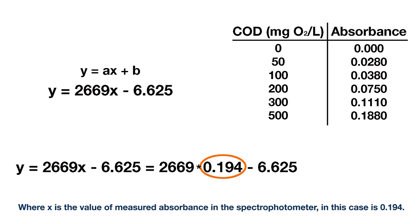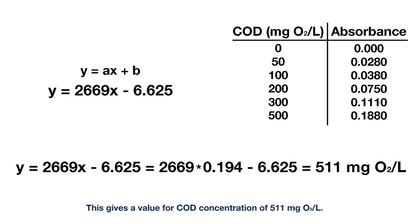the COD concentration can be calculated with the calibration curve, where X is the value of measured absorbance in the spectrophotometer. In this case, it is 0.194. This gives a value for COD concentration of 511 mg of oxygen per liter.